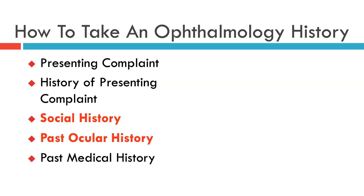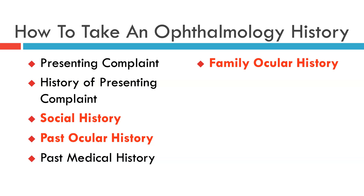We can then return to the traditional structure of the history by taking the past medical history. Before moving on to the family medical history, it's important to state the family ocular history. You should talk about the need for strong spectacles in any family members, whether any family members have been born with eye diseases, and whether any family members have needed medical intervention in young or middle age for conditions such as glaucoma or retinal disease.